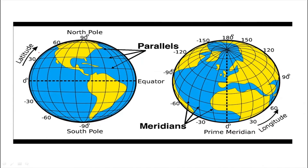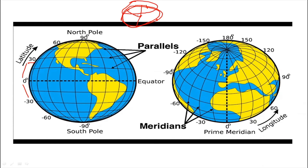Let's start from parallels or latitude. Latitude is the angular distance measured north or south from the equator. Imagine a 3D figure: this is the circumference of the Earth and this is the center. If this is the 30-degree parallel, all the places on this parallel have an angular distance of 30 degrees from the center of the Earth. Similarly, all places on a 60-degree parallel have an angular distance of 60 degrees.